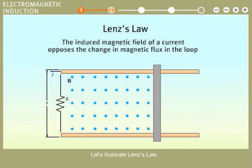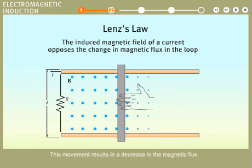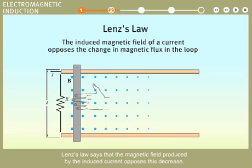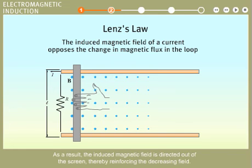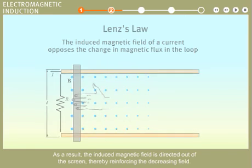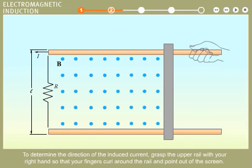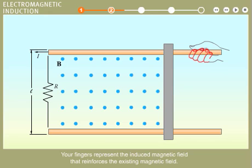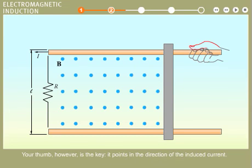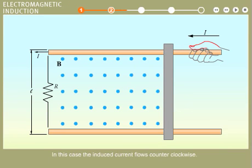Let's illustrate Lenz's law. Suppose that a movable bar is pushed to the left. This movement results in a decrease in the magnetic flux. Lenz's law says that the magnetic field produced by the induced current opposes this decrease. As a result, the induced magnetic field is directed out of the screen, thereby reinforcing the decreasing field. To determine the direction of the induced current, grasp the upper rail with your right hand so that your fingers curl around the rail and point out of the screen. Your fingers represent the induced magnetic field that reinforces the existing magnetic field. Your thumb points in the direction of the induced current — in this case, the induced current flows counter-clockwise.